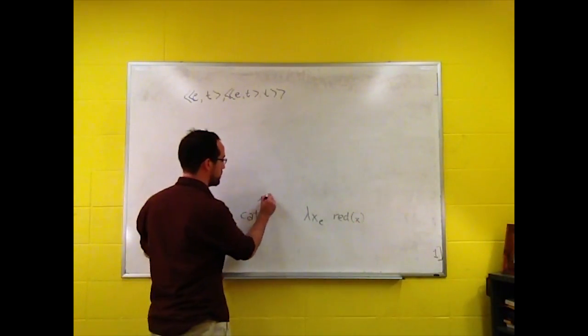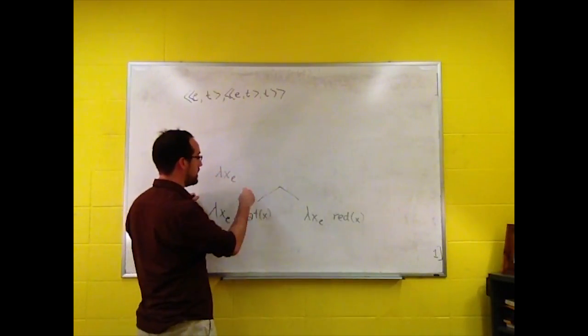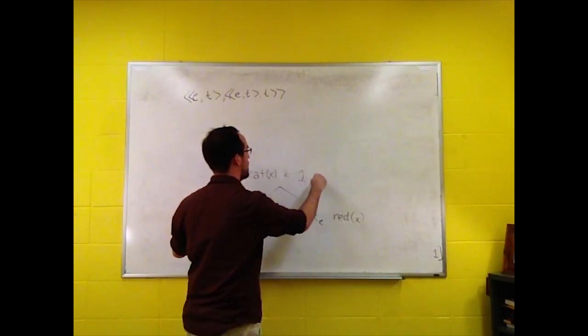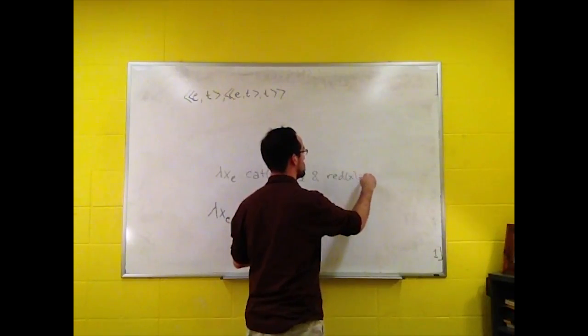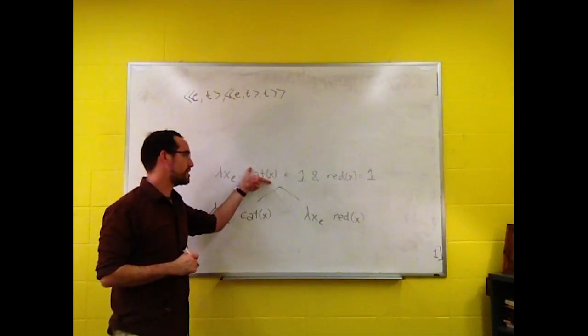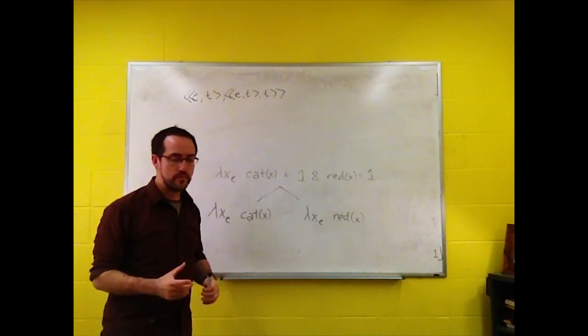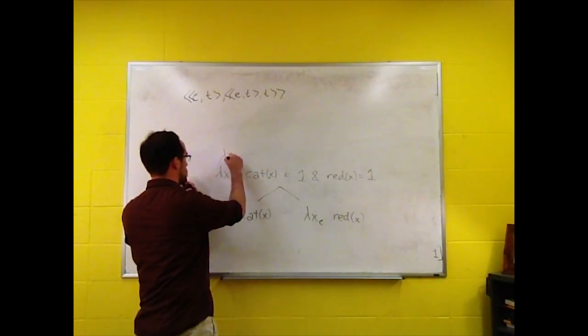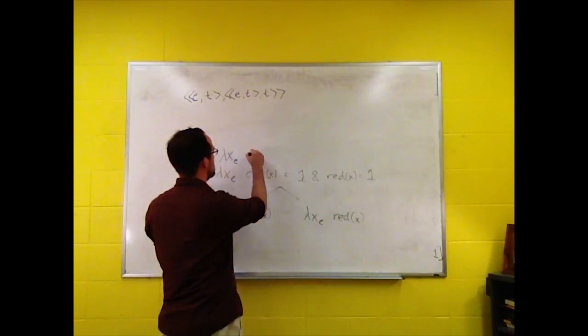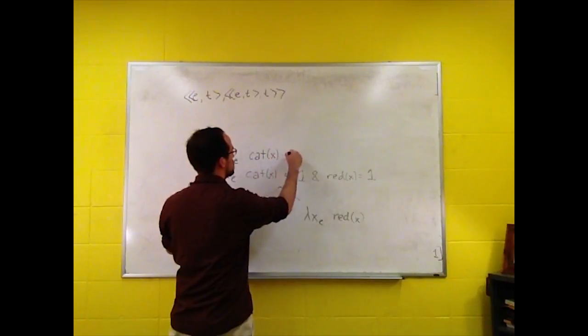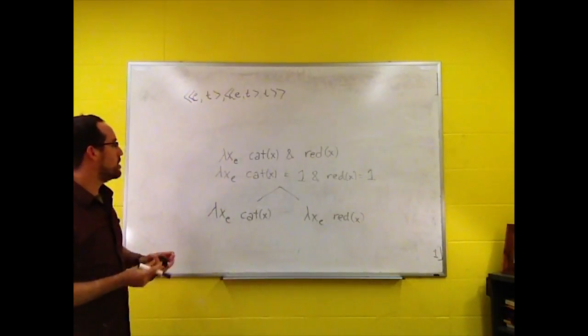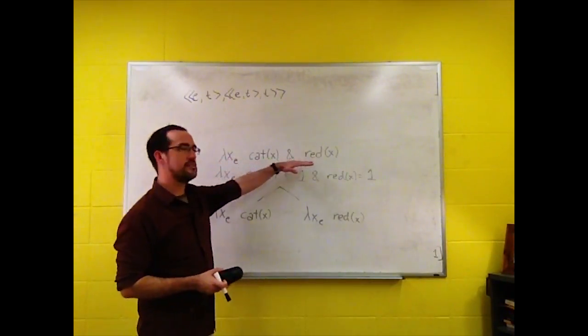Well, according to our predicate modification rule, that would give us something like this: lambda X in type E, cat of X, and, equals one, sorry, and red of X equals one. Now, nobody writes those equals ones, and instead we employ cat of X to represent cat of X equals one. Which, again, it's not strictly fair to change what this abbreviation means, but everyone does it. Everyone knows exactly what you mean.